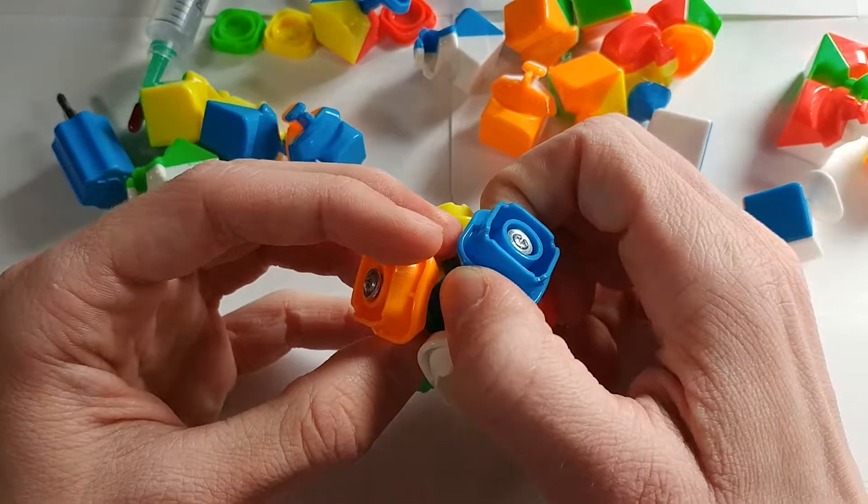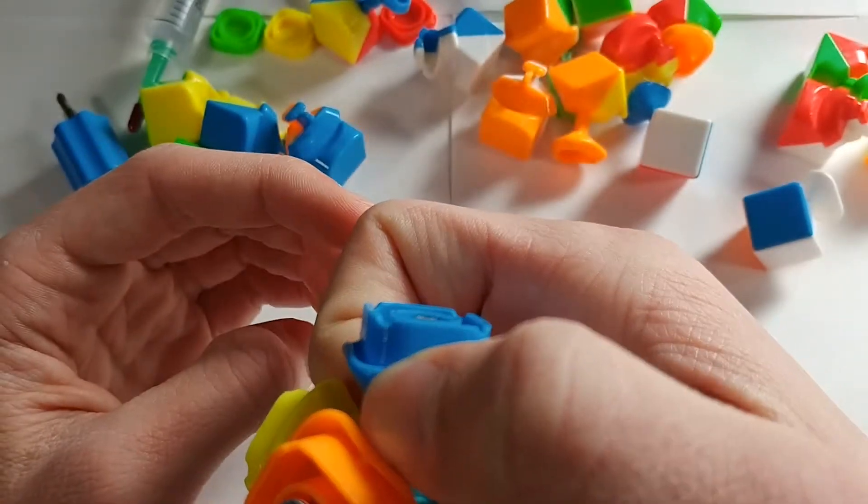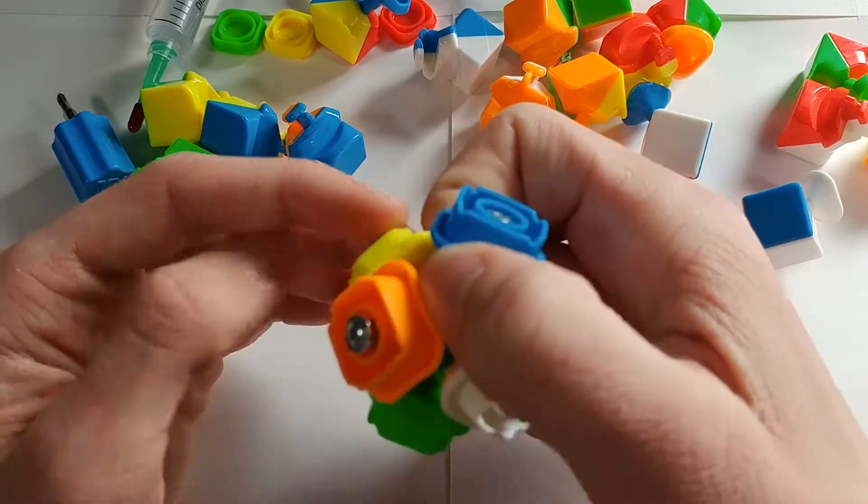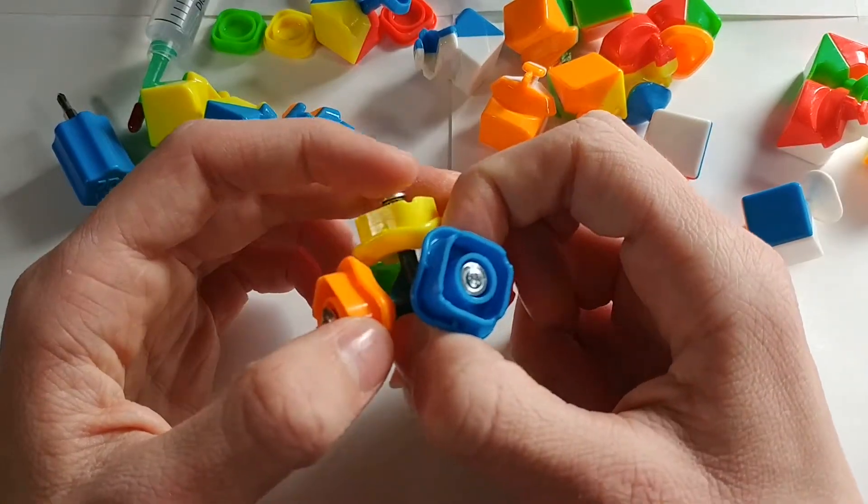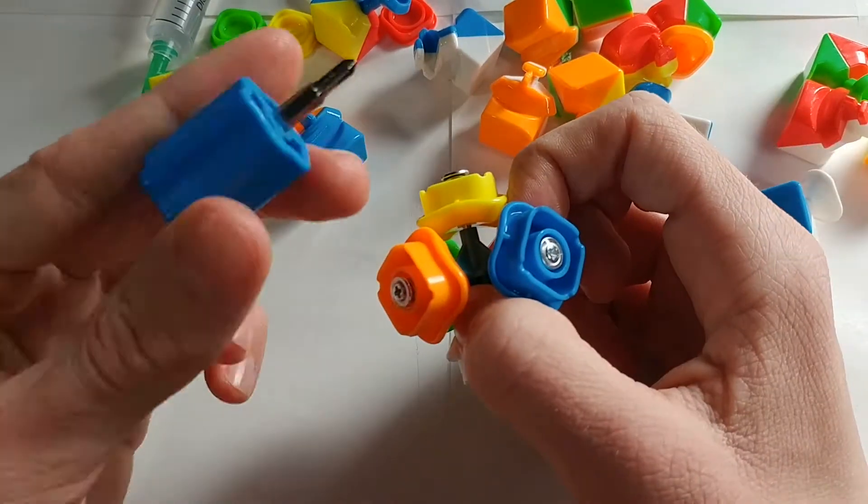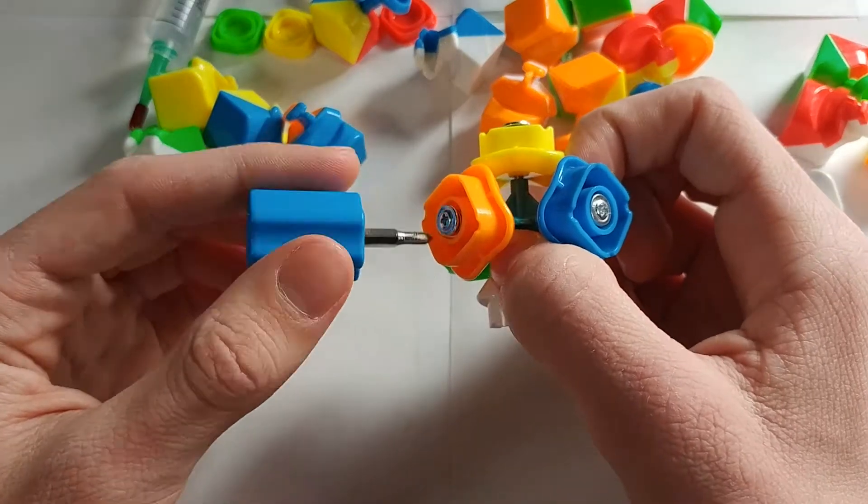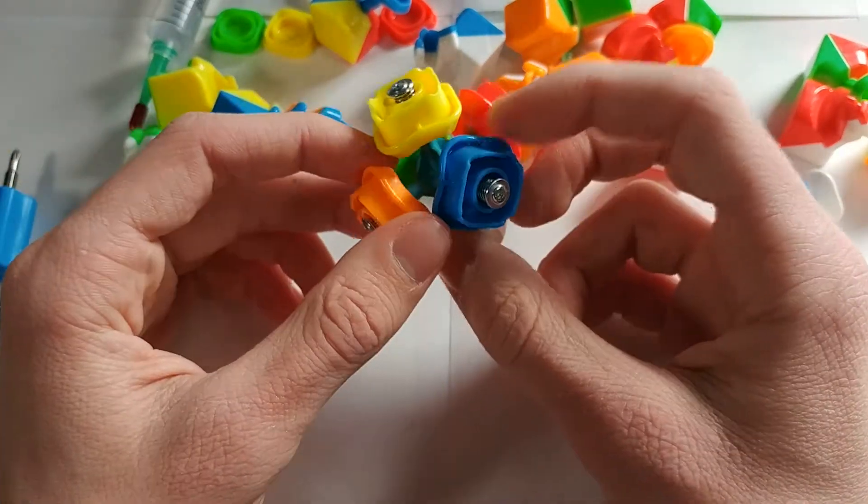If it looks something like this, where the screw is hidden, then it's going to be really hard to lubricate it. So what you're going to want to do in this case is take your screwdriver and loosen it until it is exposed.